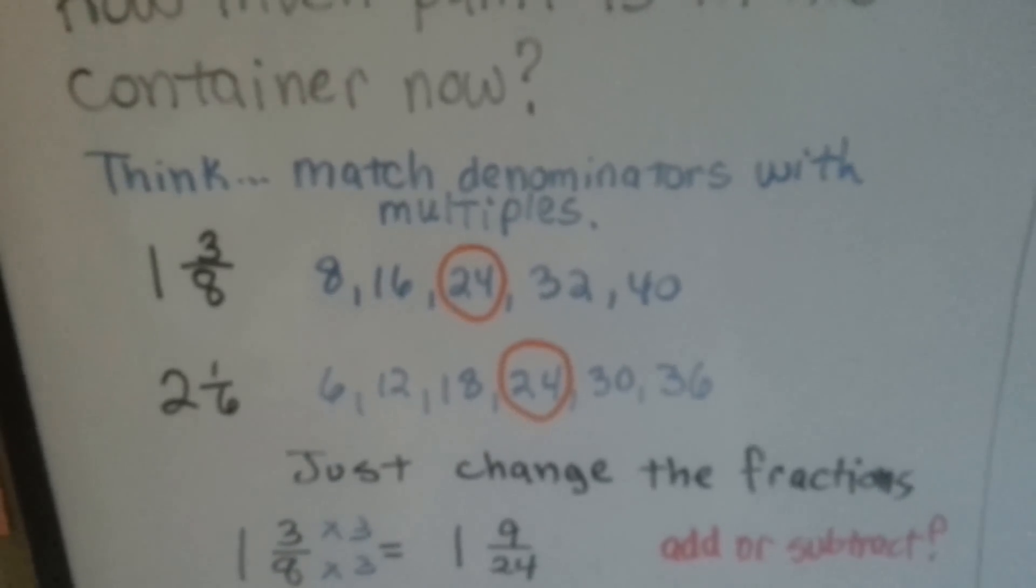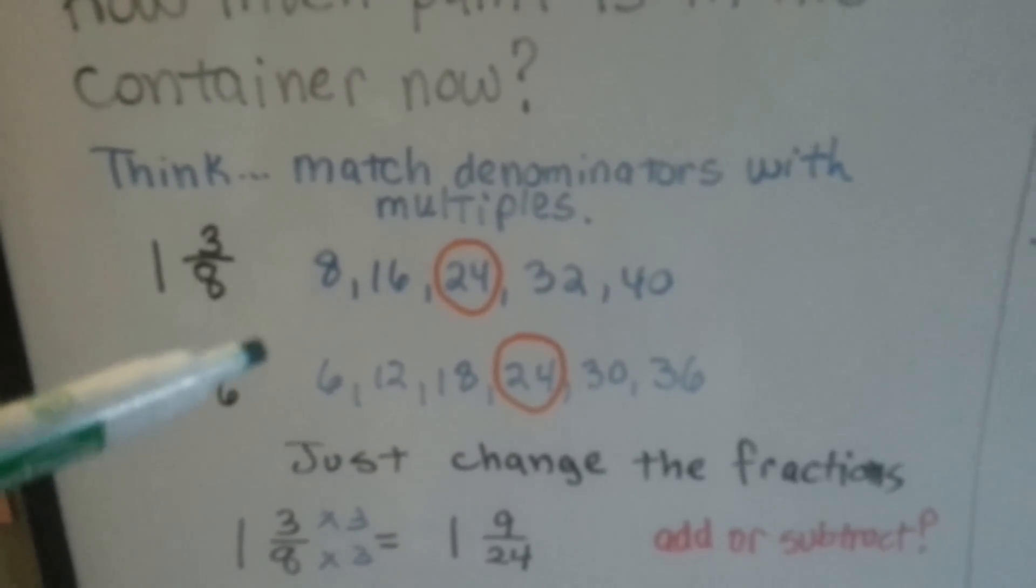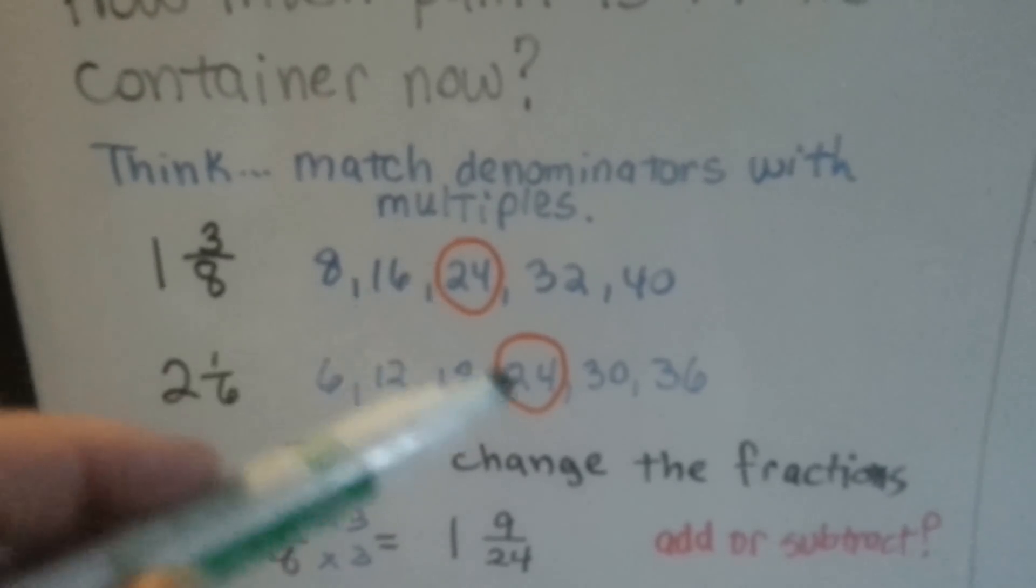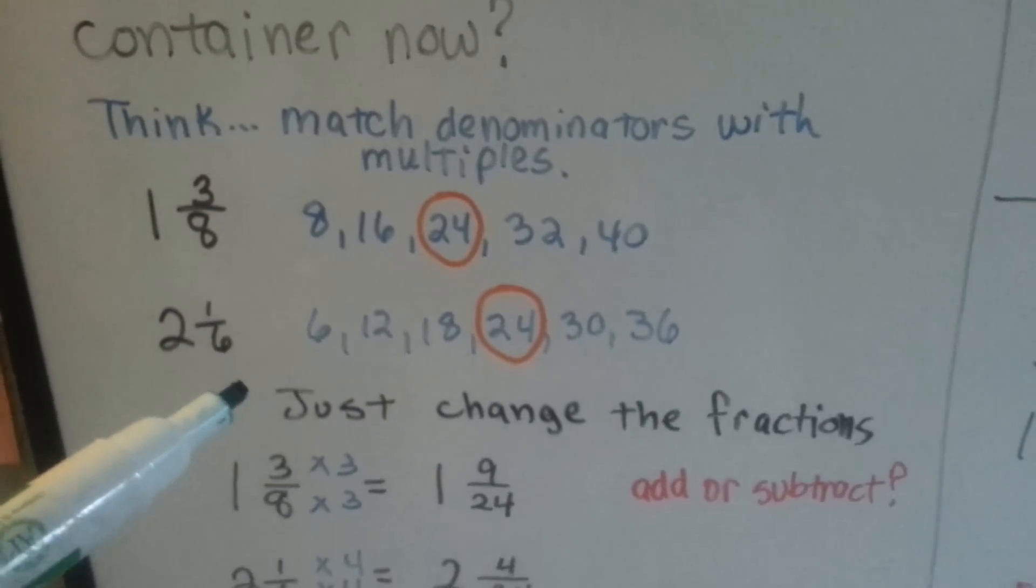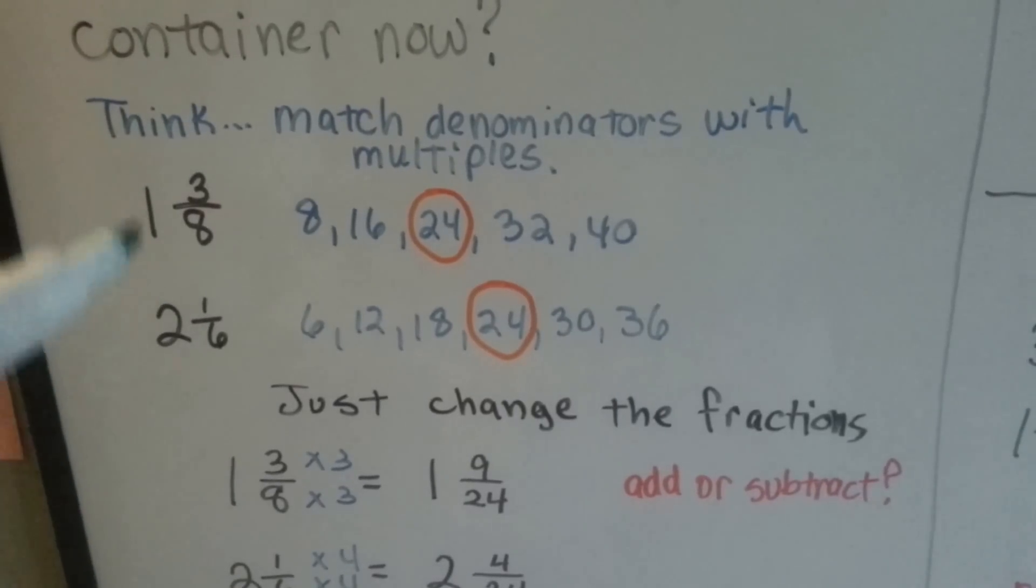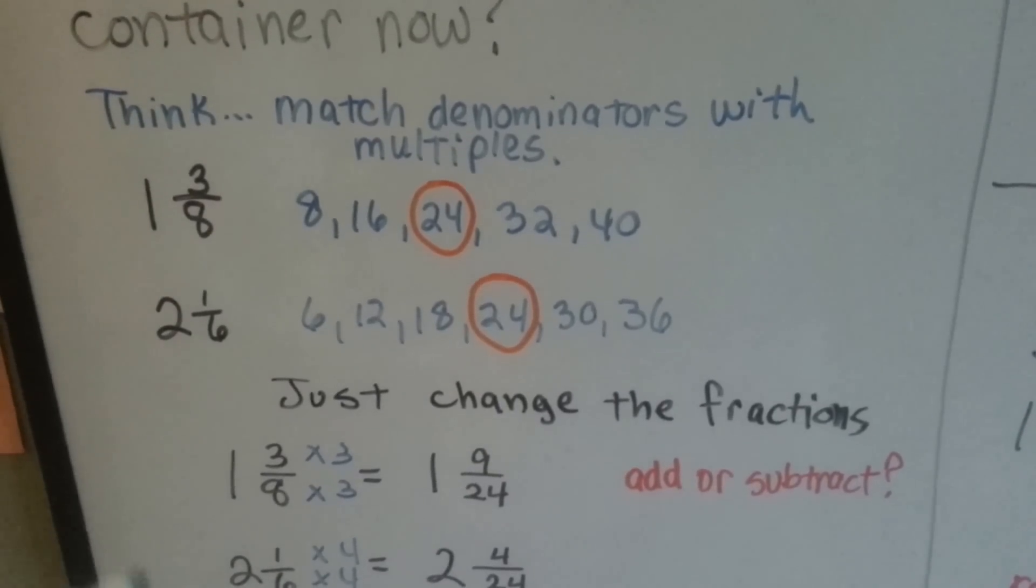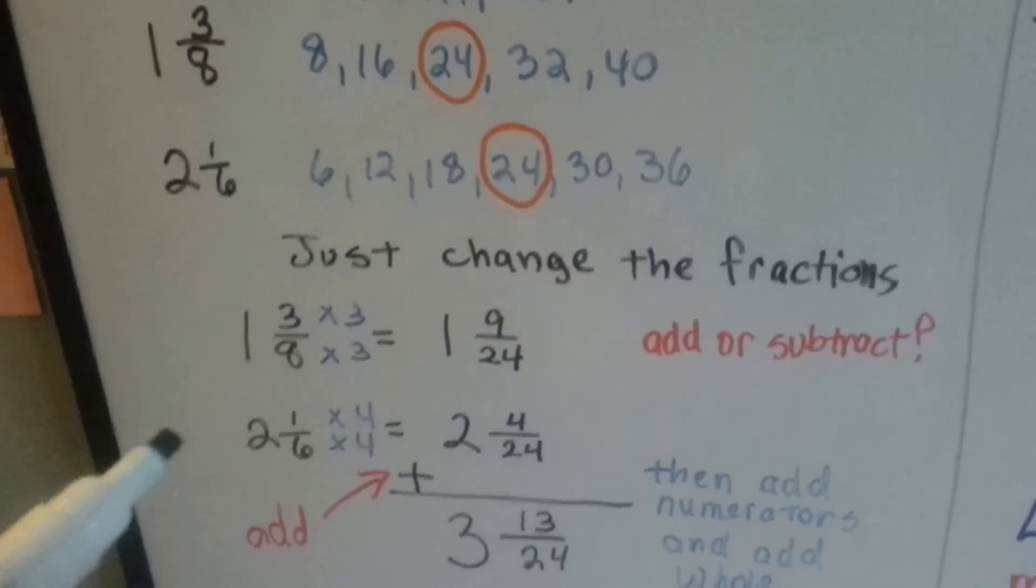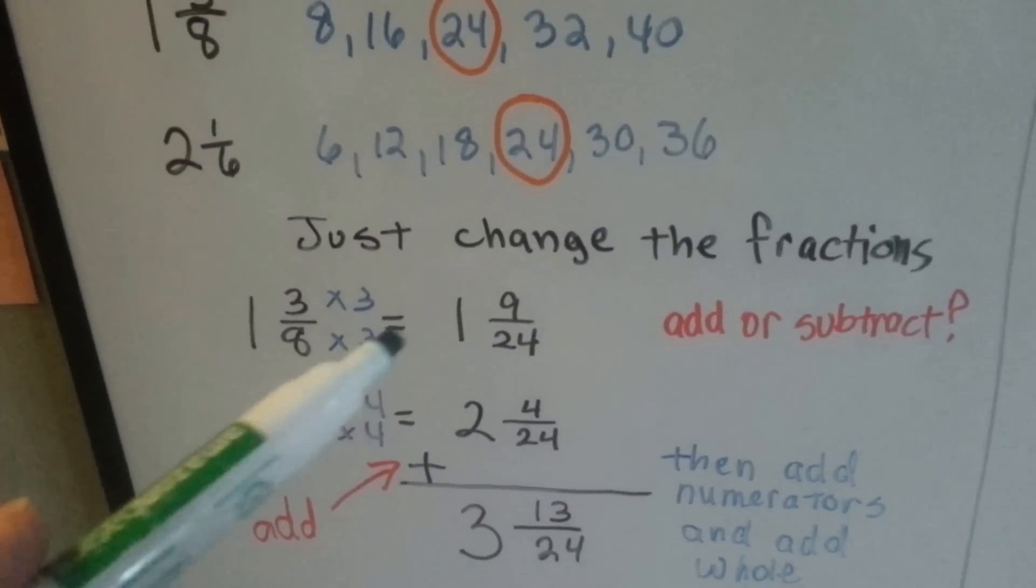8 and 6 need to meet. We write a list of multiples for 8 and a list of multiples for 6 and see that they meet at 24. So we just change the fractions. We're going to leave the whole numbers the same when we do this problem. So where can 8 and 6 meet? At 24's house.